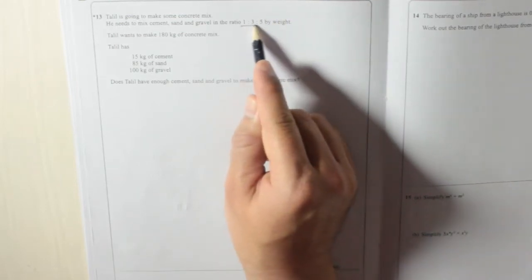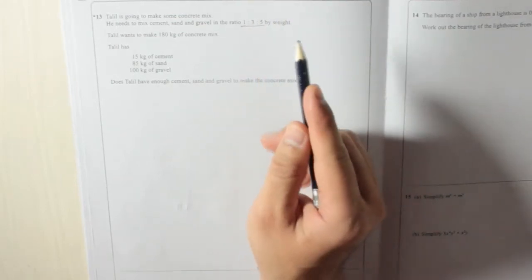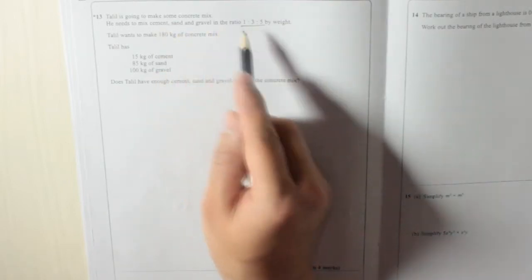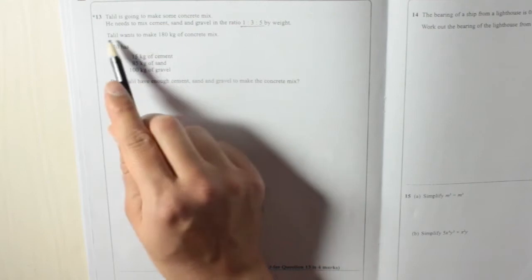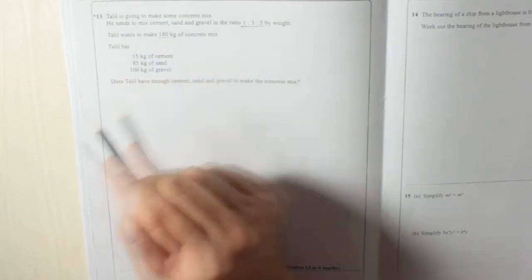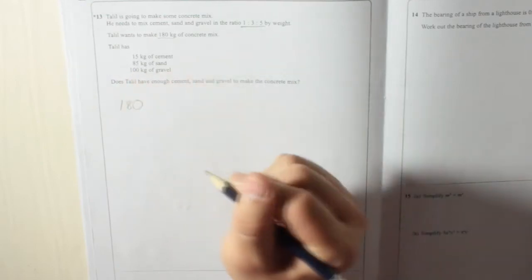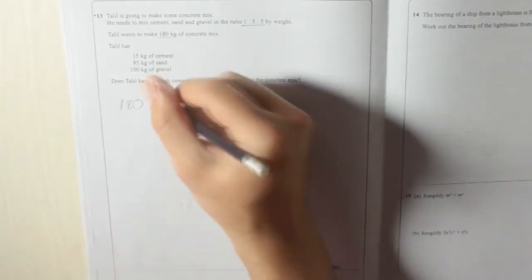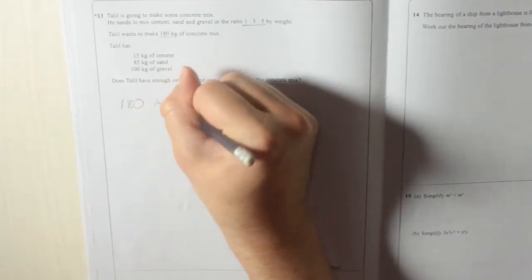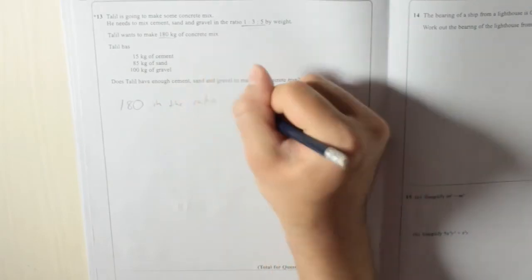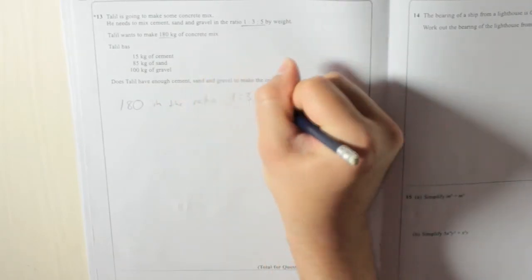Now, there's the ratio of what concrete is made up of: cement, sand and gravel. So what we're going to do, because he wants 180 kilograms, we're going to divide 180 kilograms in the ratio 1 to 3 to 5.